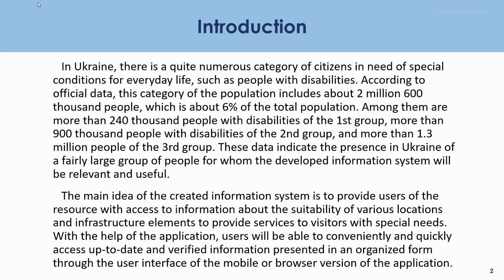Introduction. In Ukraine, there is a quite numerous category of citizens in need of special conditions for everyday life, such as people with disabilities. According to official data, this category of the population includes about 2,600,000 people, which is about 6% of the total population. Among them, there are more than 240,000 people with disabilities of the first group, more than 900,000 of the second group, and more than 1.3 million people of the third group.